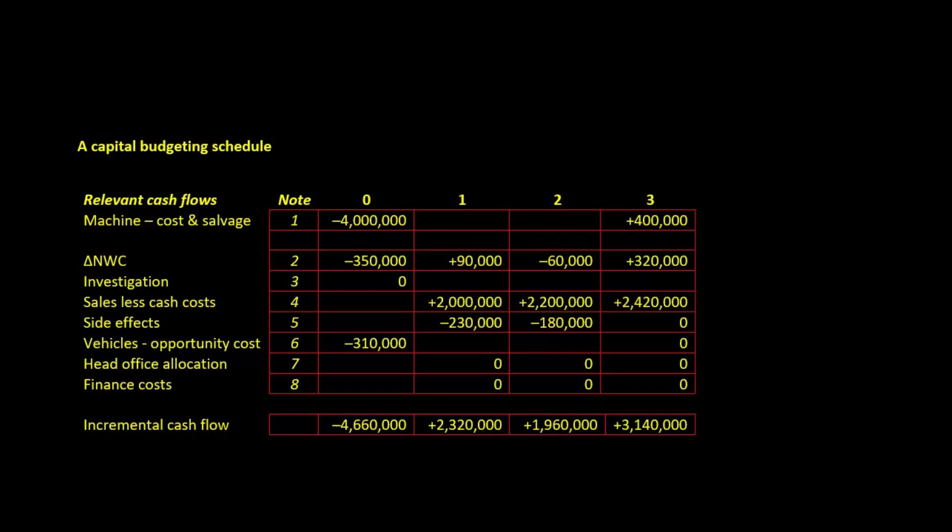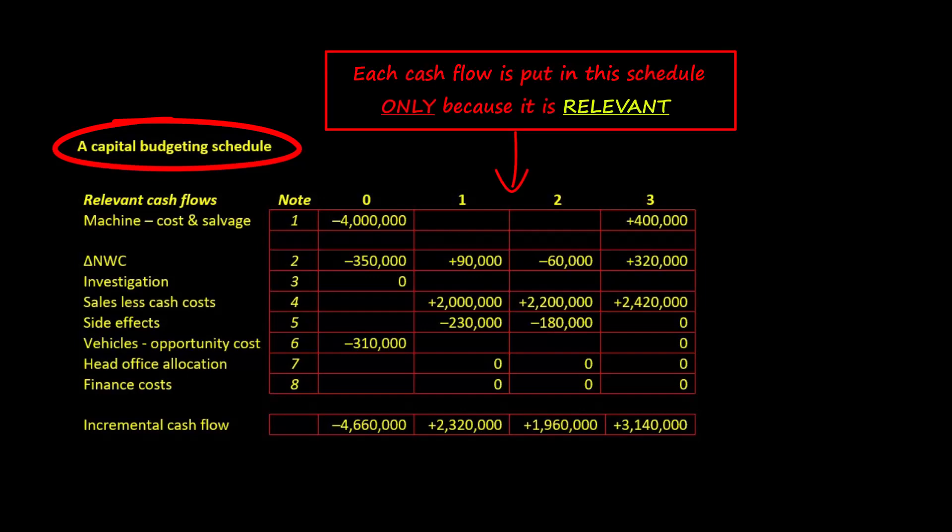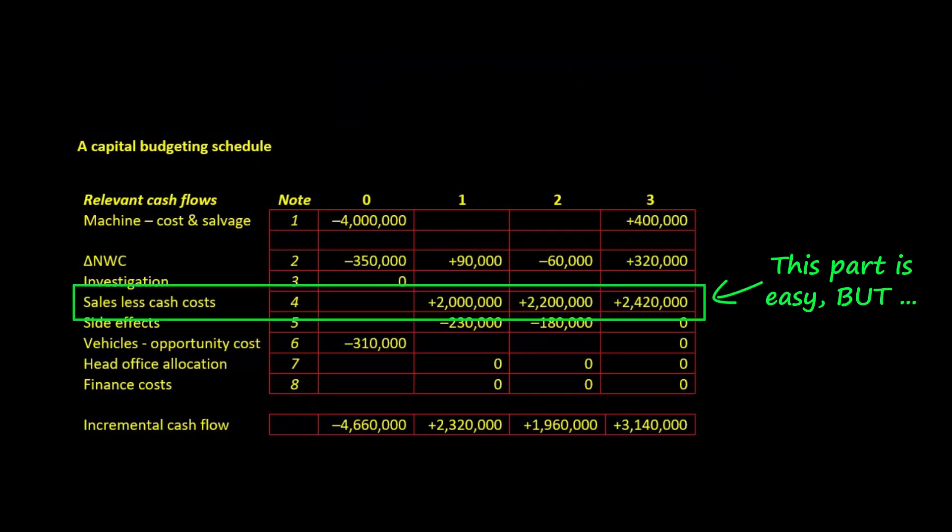The cash flows that are included in the capital budgeting analysis are those that are relevant to the project accept or reject decision. Often the identification of these relevant cash flows is very simple, such as when you are dealing with the revenue that the new project will bring to the firm.